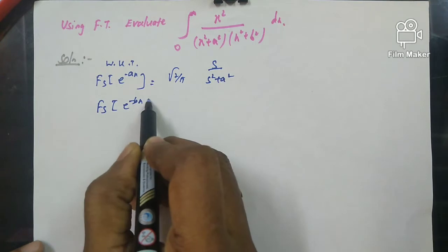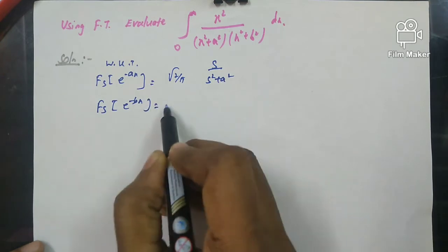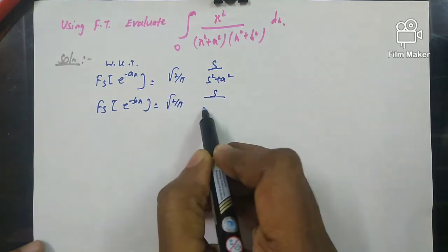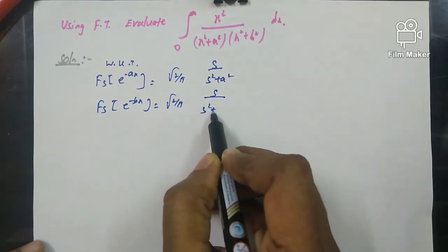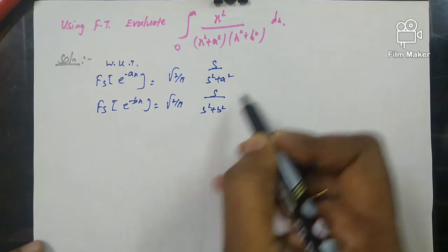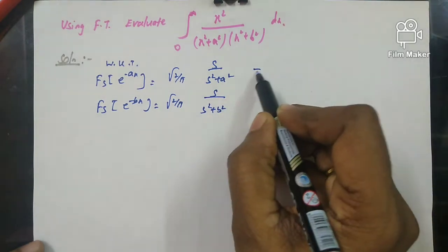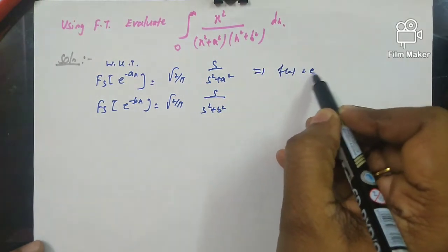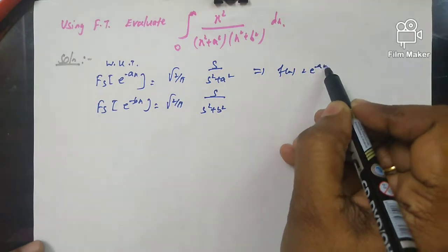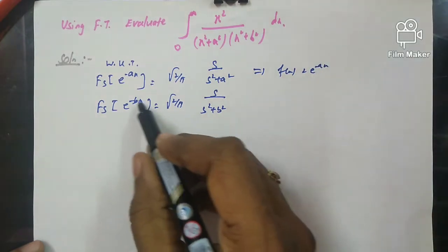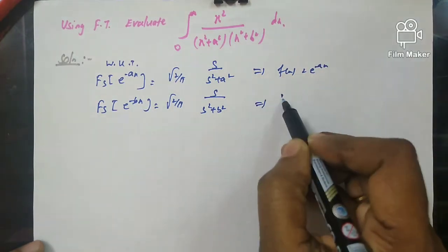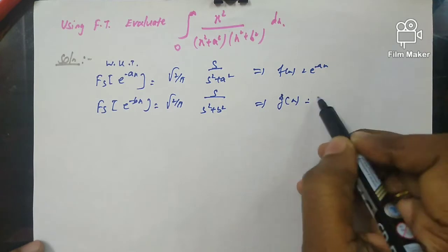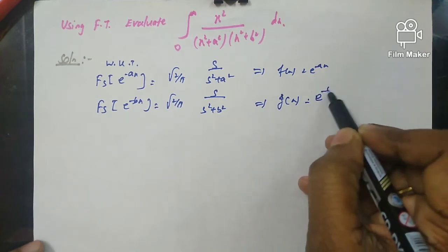In this question, we have x² and we will take a function f(x) = e^(−ax) and g(x) = e^(−bx). The sine transform of g(x) = e^(−bx) gives root of (2/π) times s divided by (s² + b²).